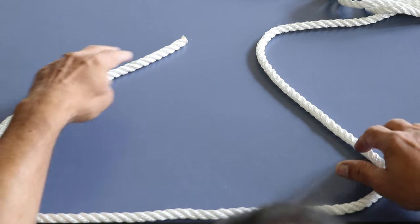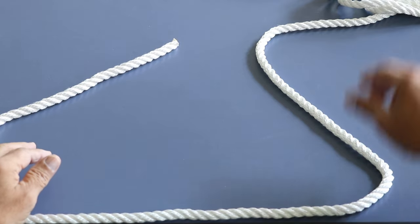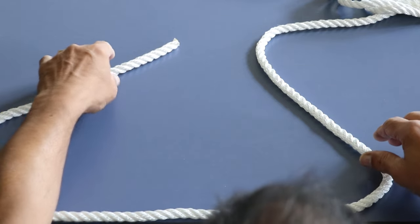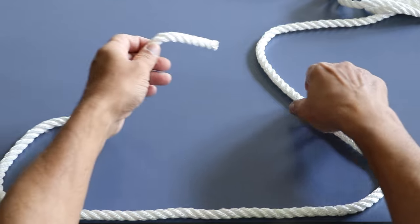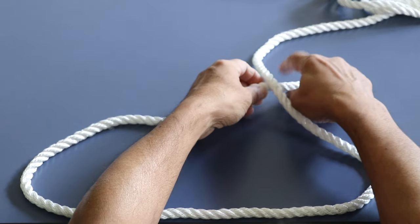So you have the shorter end on your left hand side and the longer end on your right hand side. You pick the shorter end and pass it under the longer end.